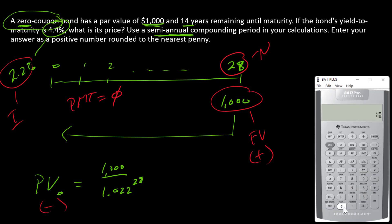So let's enter it this way. $1,000 is FV. Zero is PMT. 28 is N. 2.2 is I. Compute PV. There is my answer.